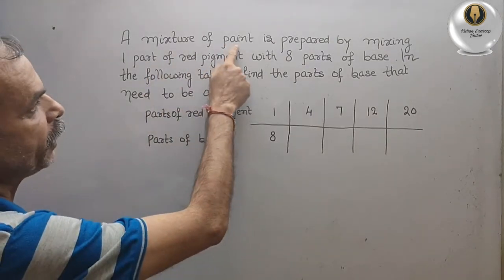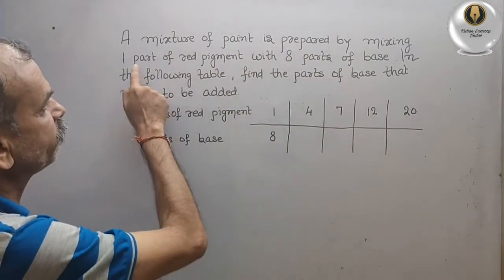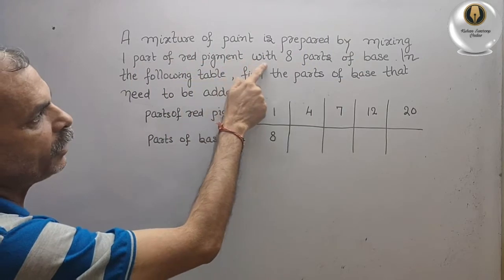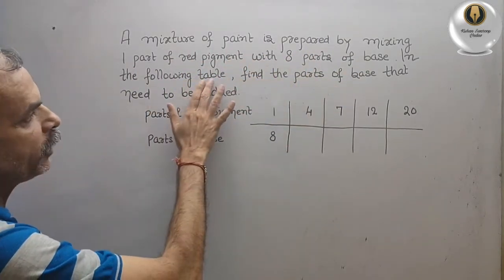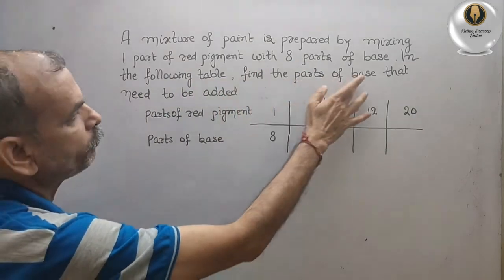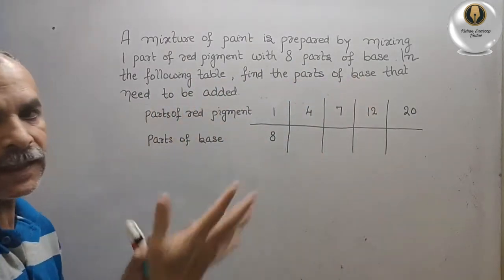A mixture of paint is prepared by mixing one part of red pigment with 8 parts of base. In the following table, find the parts of base that need to be added.